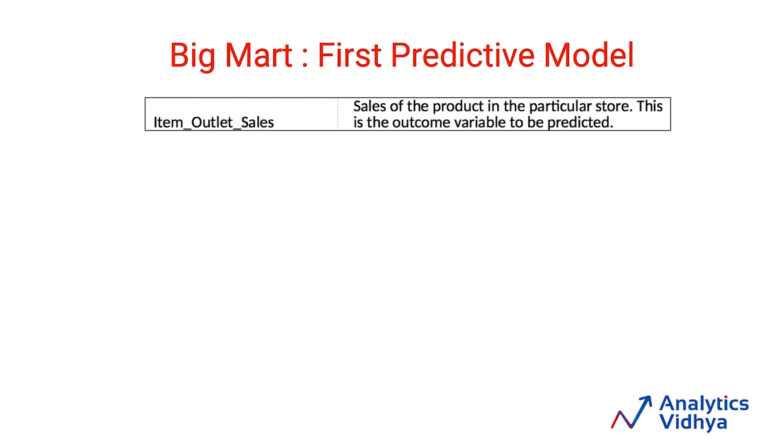We have things like item weight, fat content, visibility, which relate to item. And then about the store, like what is the size of the store? What is the location? What we need to do is predict the sales on a particular outlet for each of the products. We can use these variables as our independent variables.